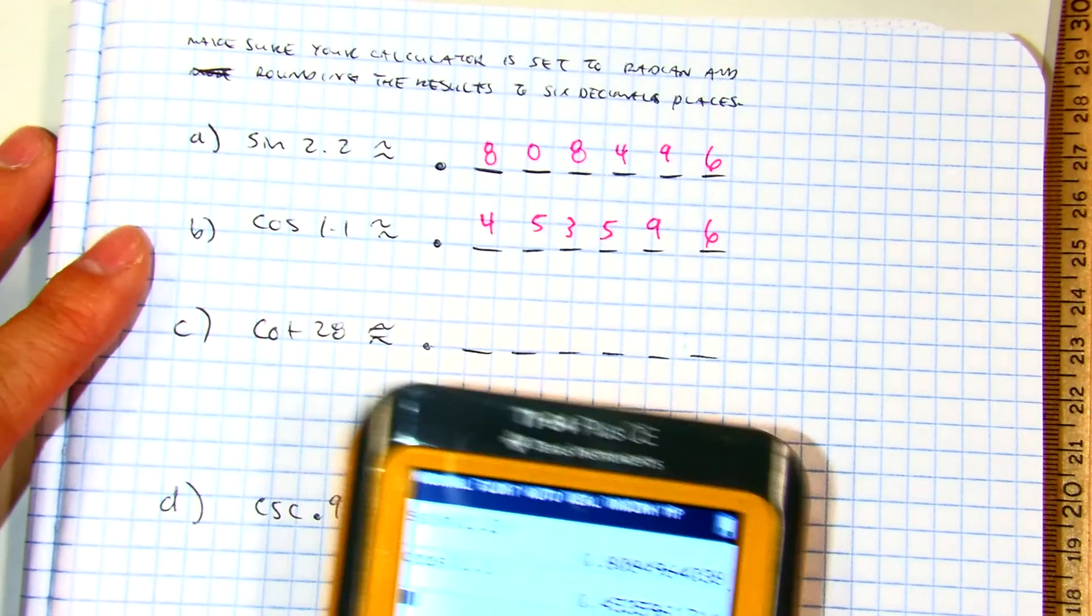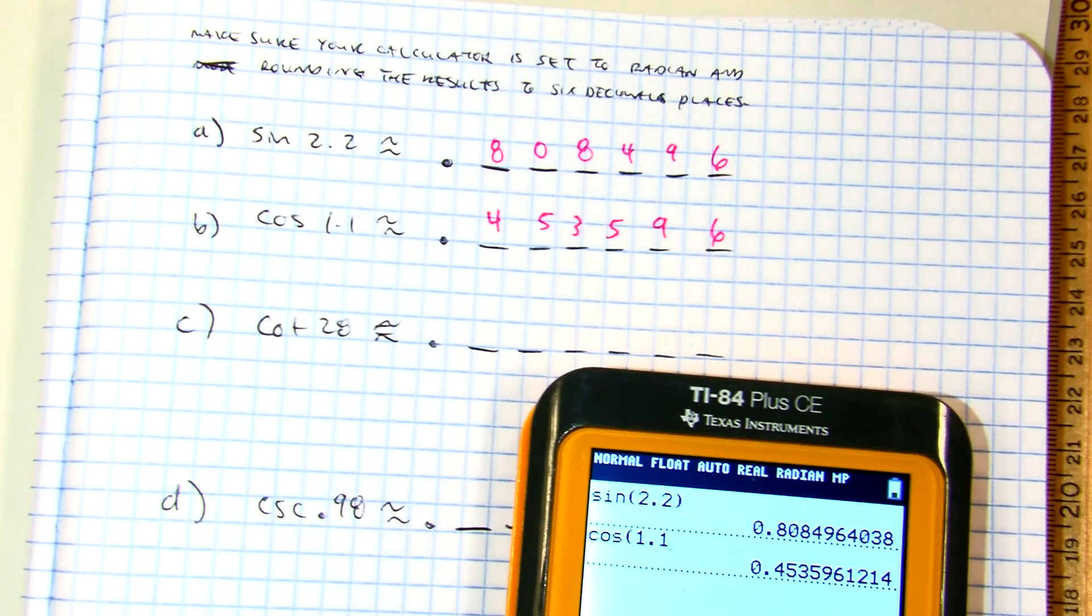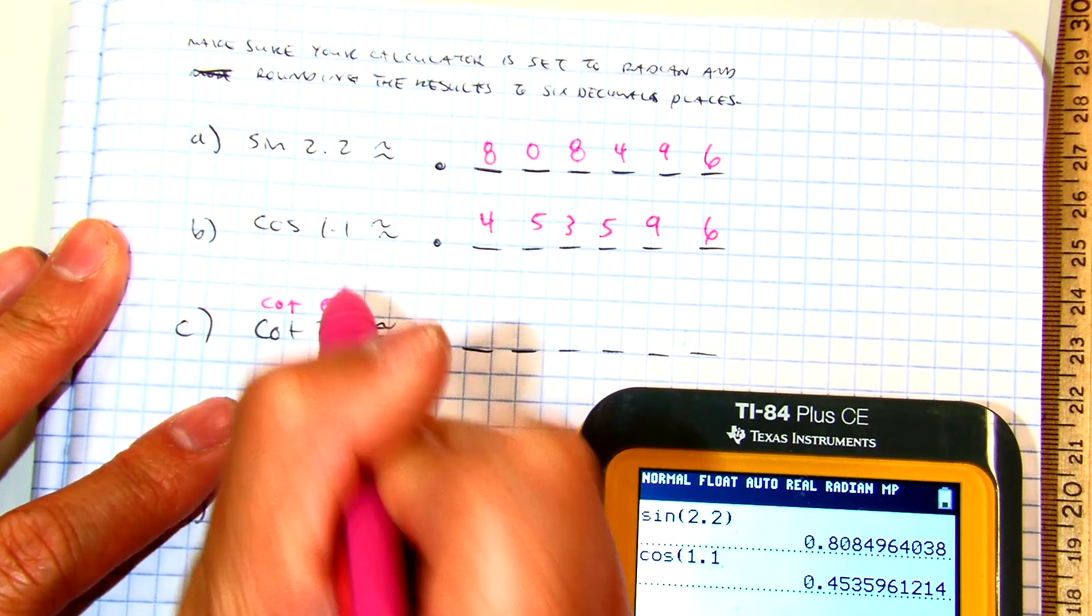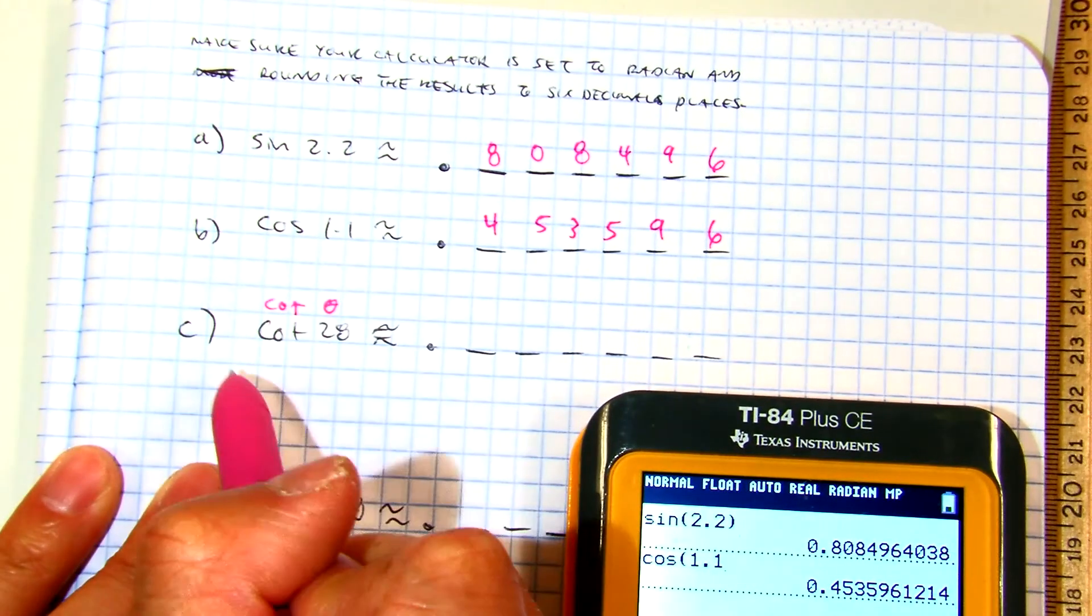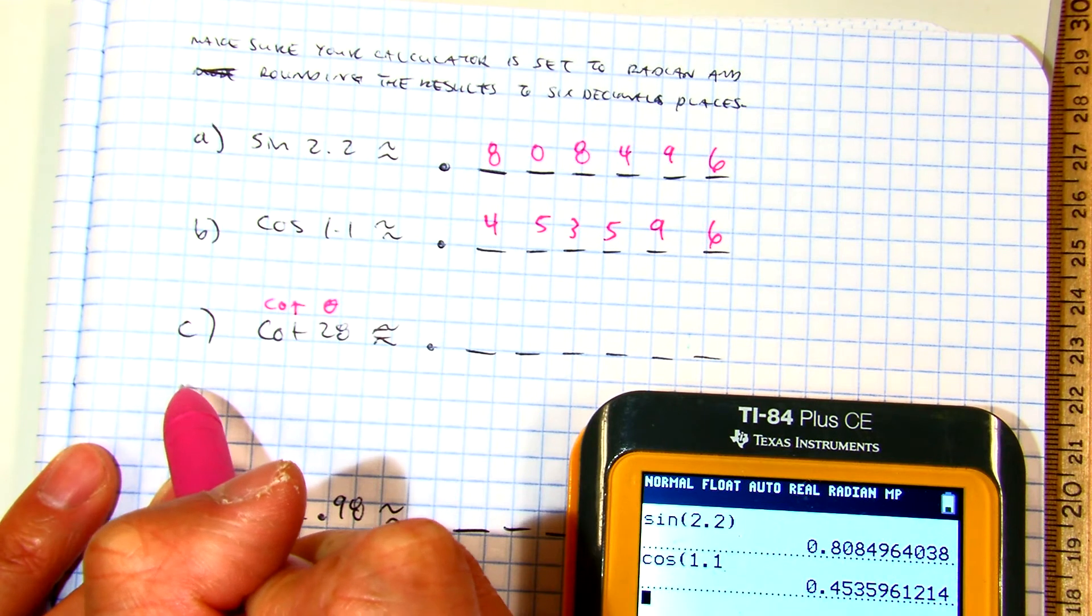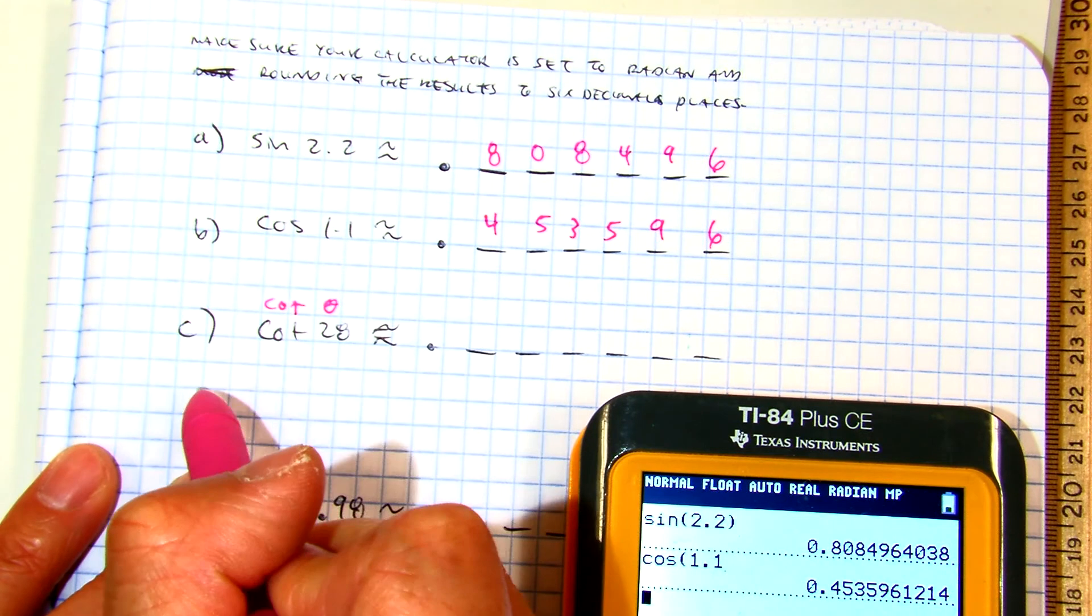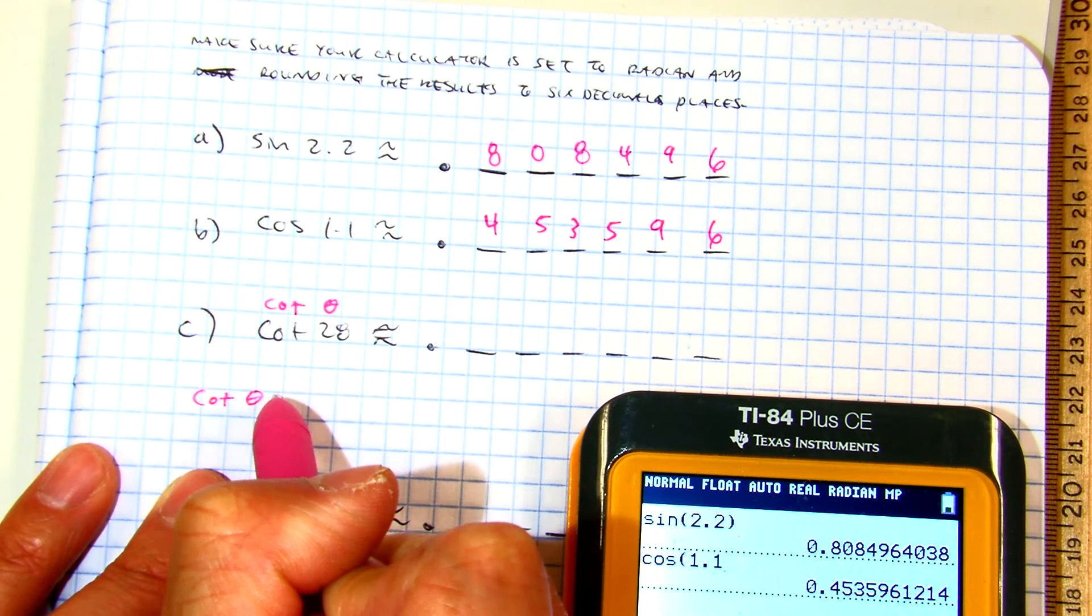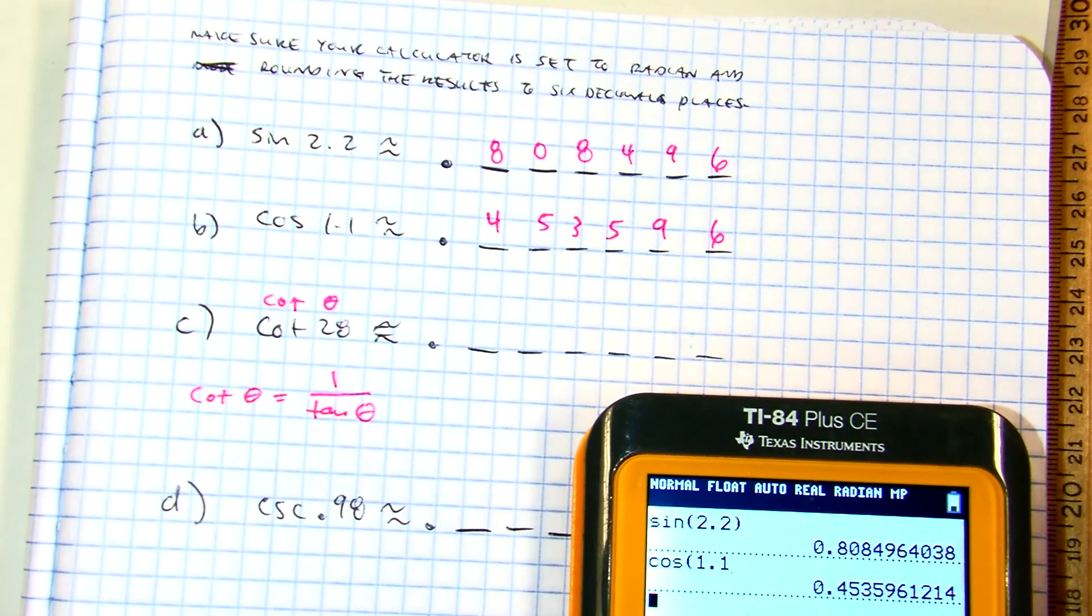Now let's do the inverse. They call these inverses. Partner A, tell partner B the reciprocal identity we need. Tangent of theta, right? And then you do the substitution.